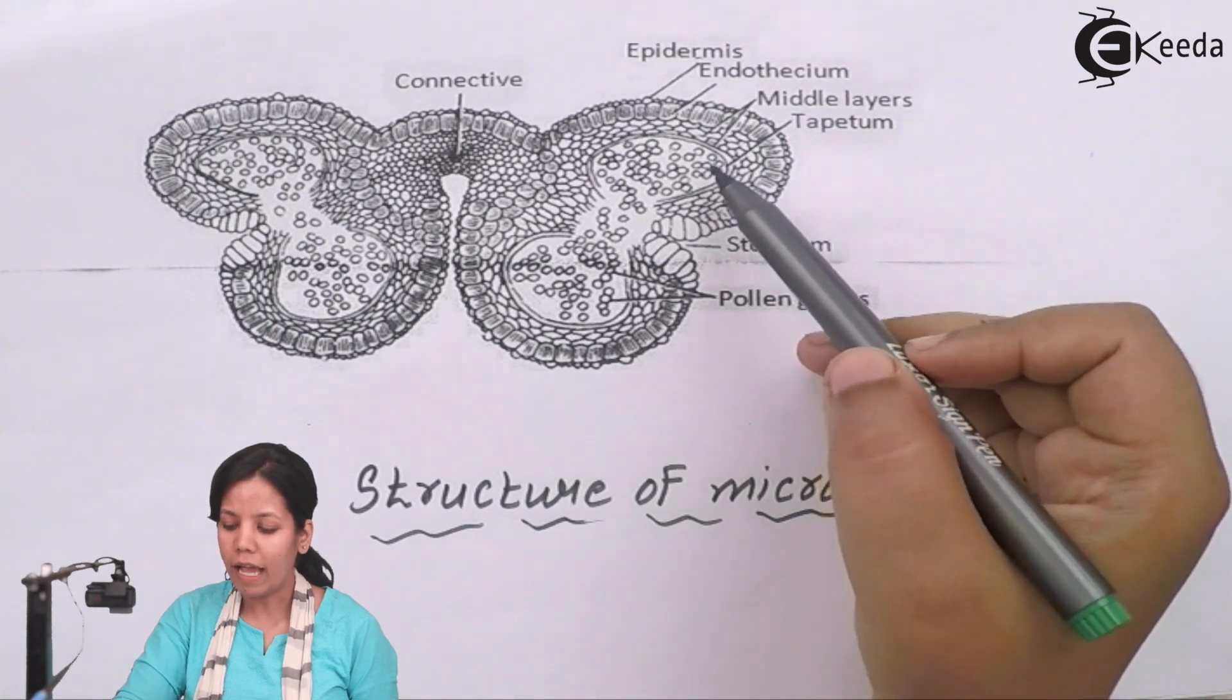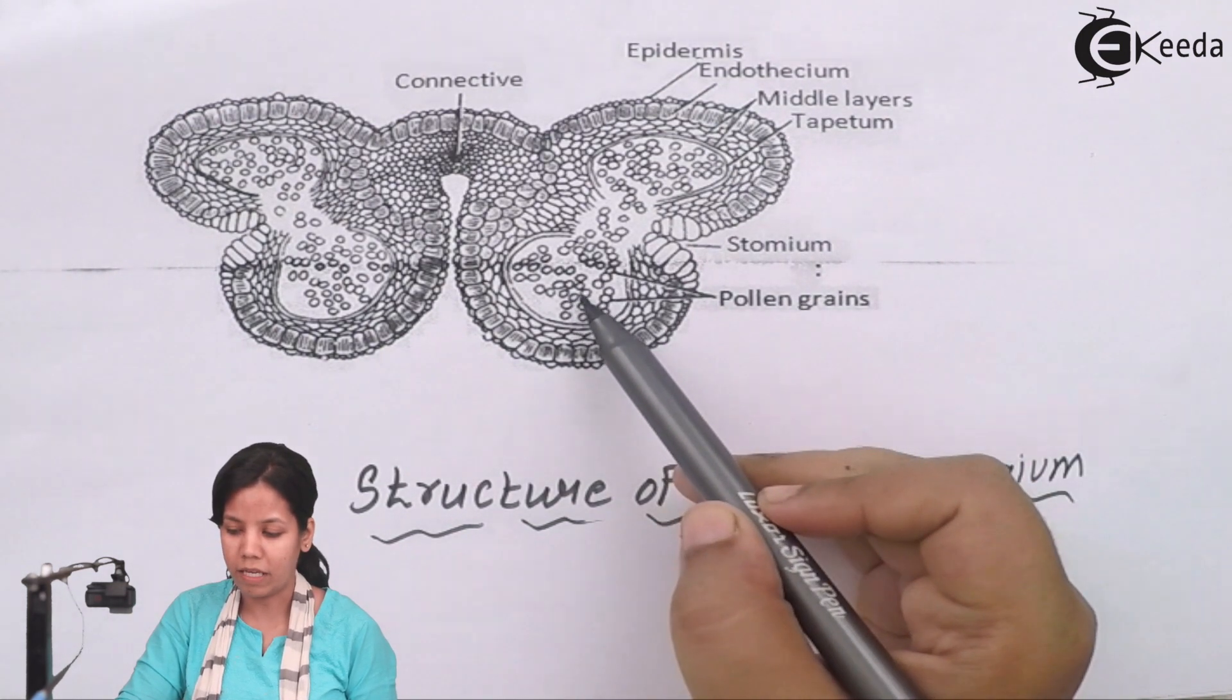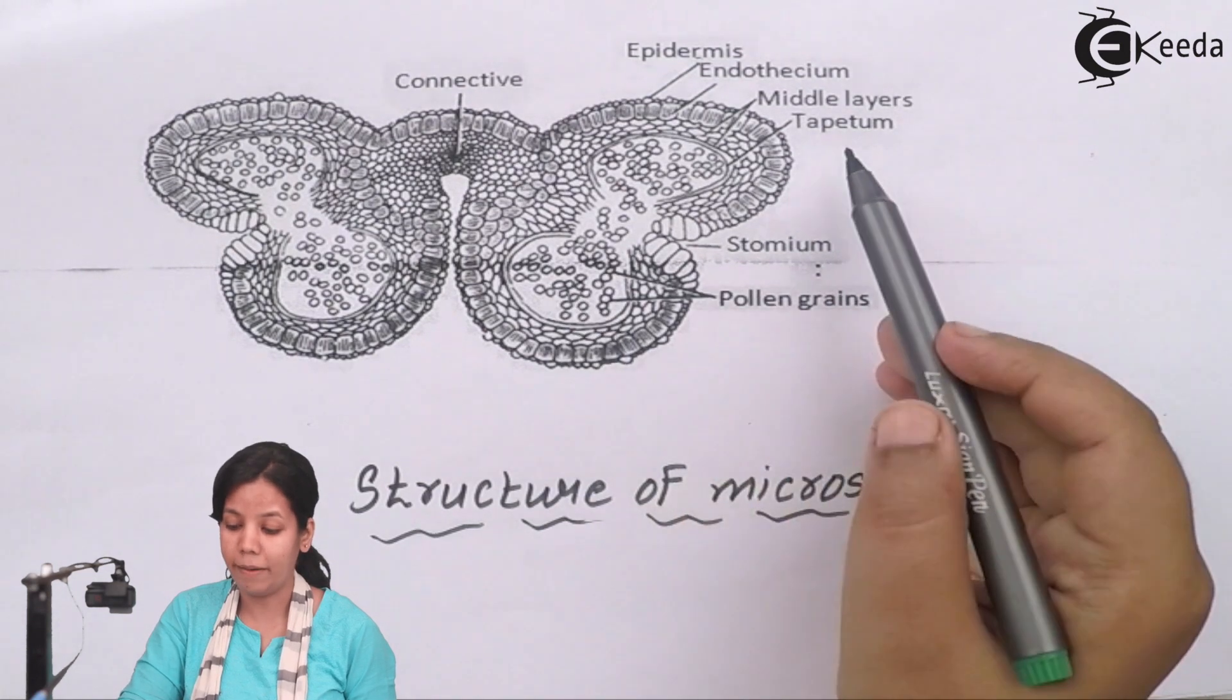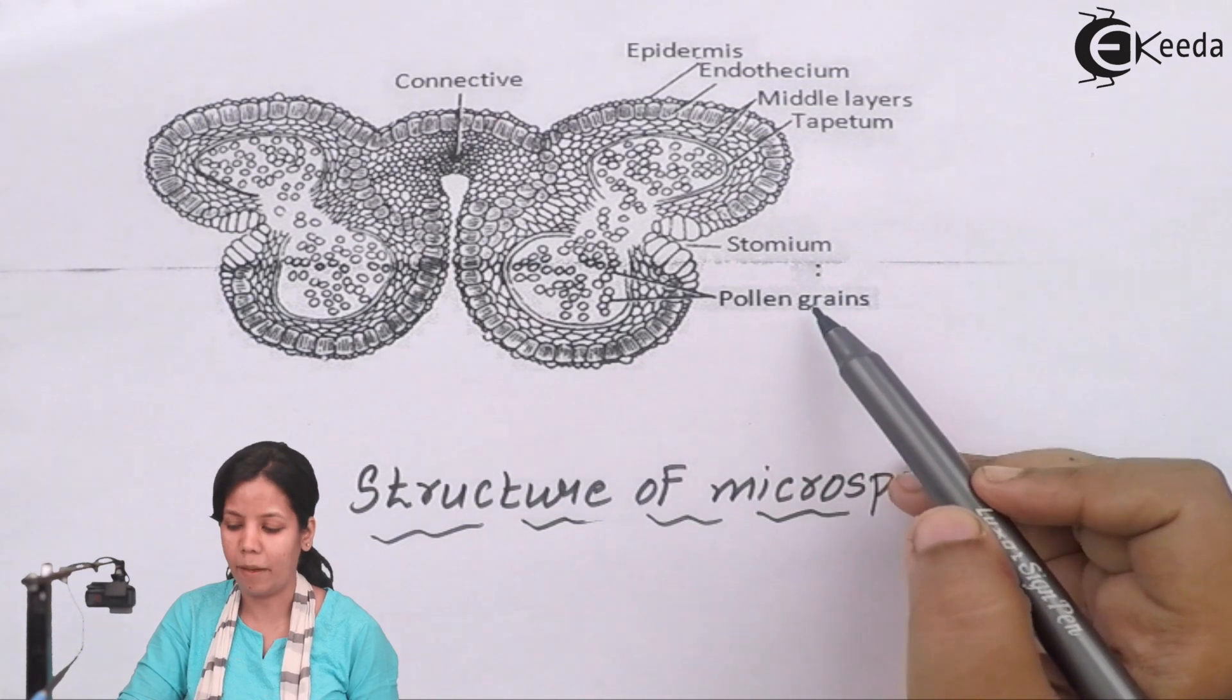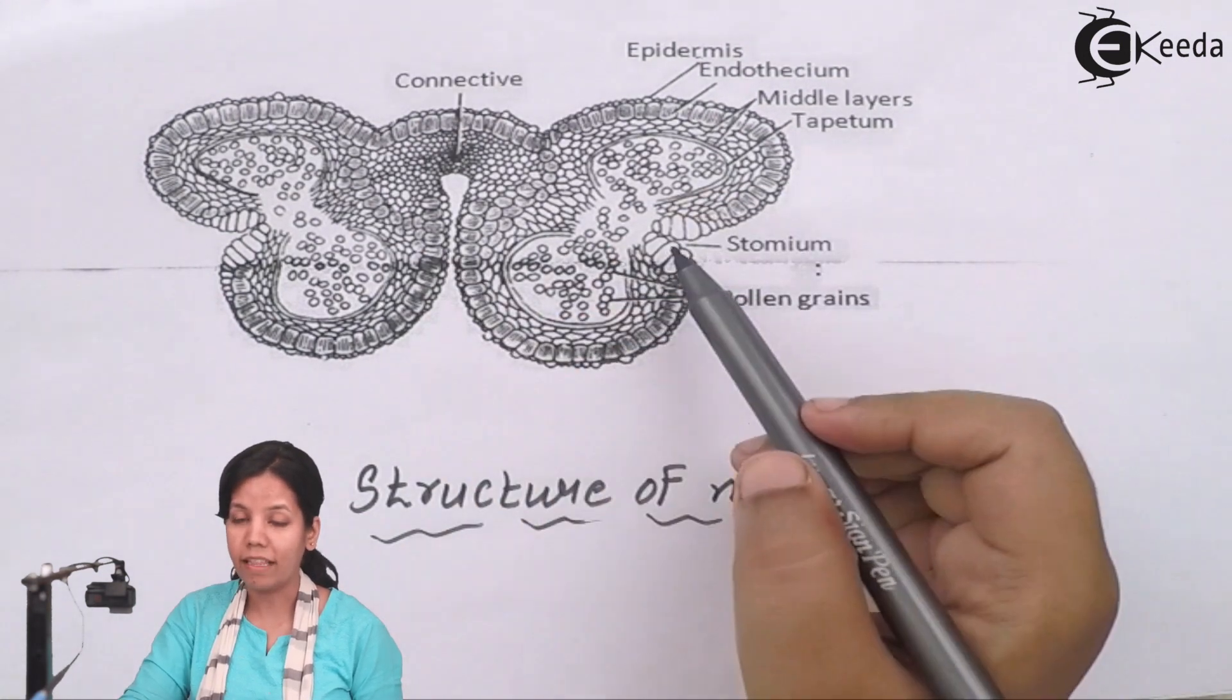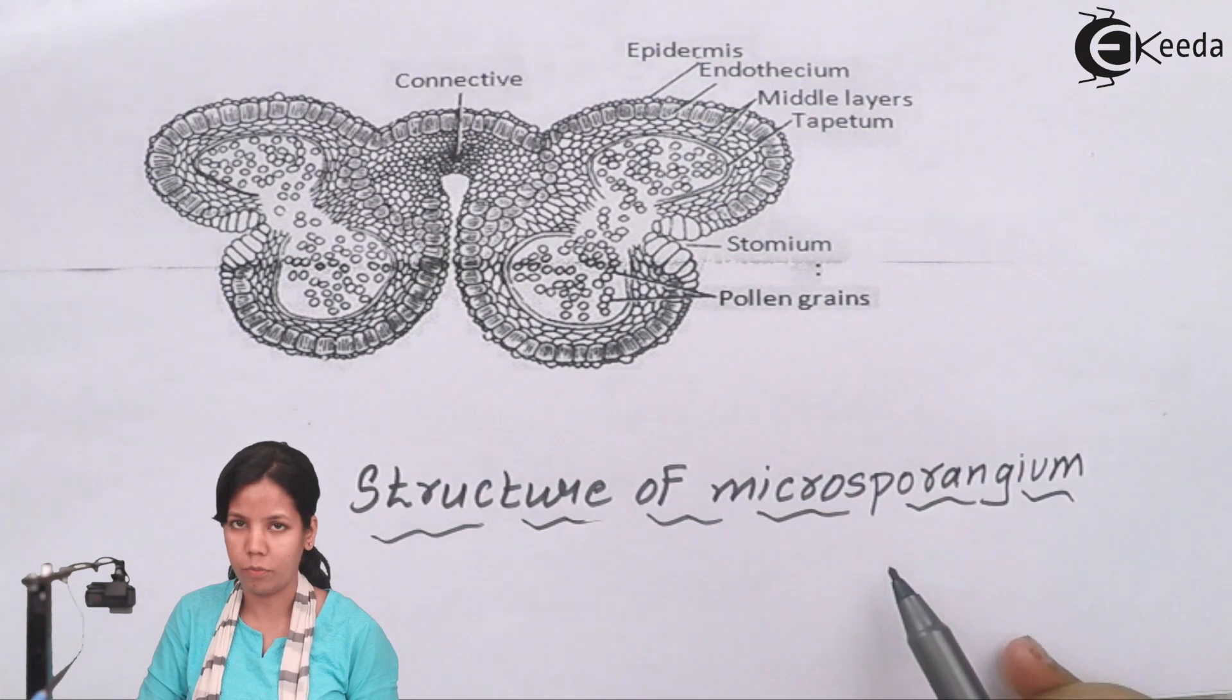Inside tapetum as you can see there are pollen grains present, so one can say that tapetum also provides protection and nourishment to pollen grains, the male gametophyte. This together constitutes the diagram of microsporangium.